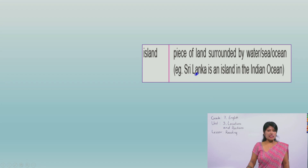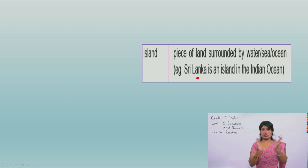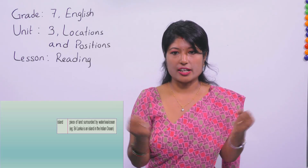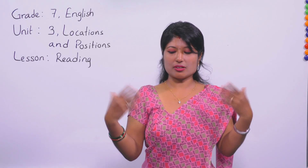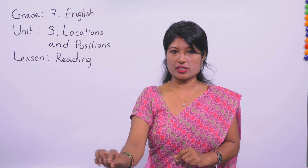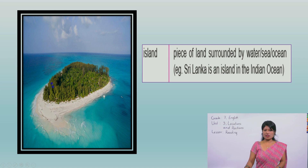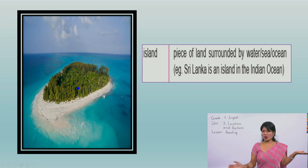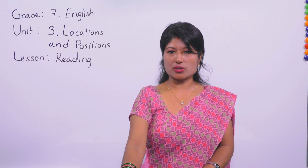Example: Sri Lanka is an island in the Indian Ocean. Sri Lanka - the whole country is surrounded by water, and it is an island. To make it better for understanding, look at this picture. This is an island - you can see blue water surrounding the land. So this is island.